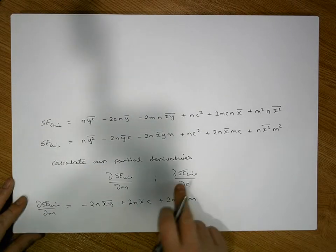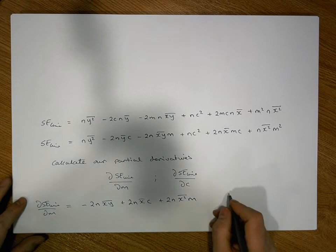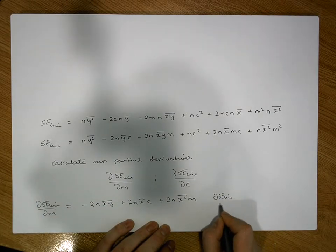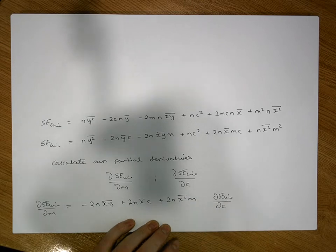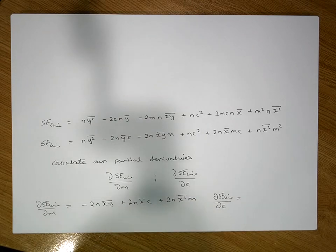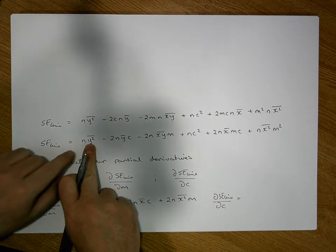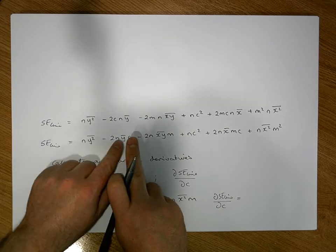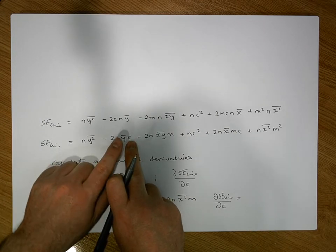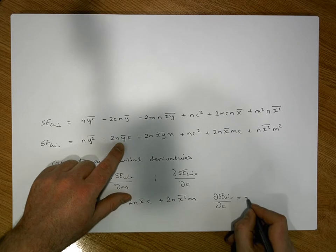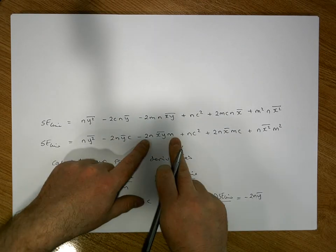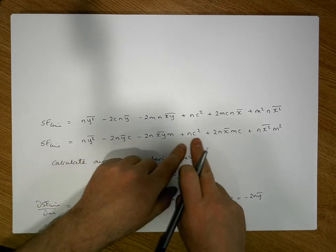The second partial derivative — delta SSE of the line with respect to the intercept c — is: differentiating minus 2n y-bar times c, that's a constant times c, so its derivative is minus 2n y-bar.